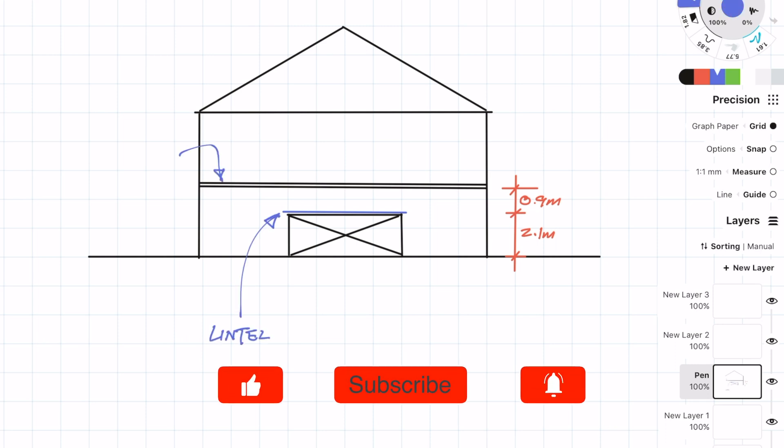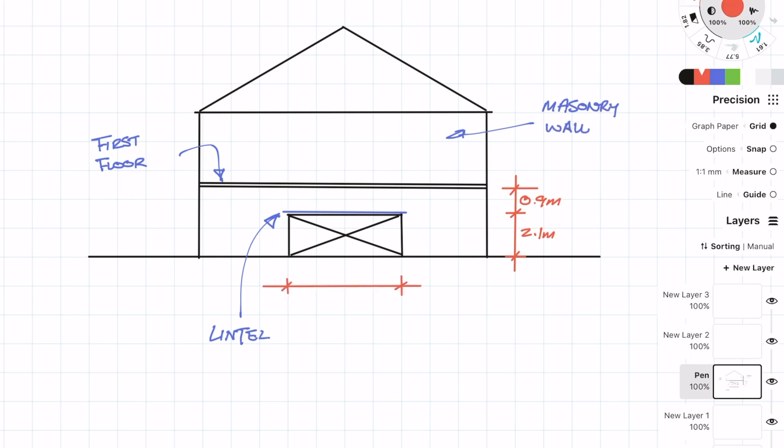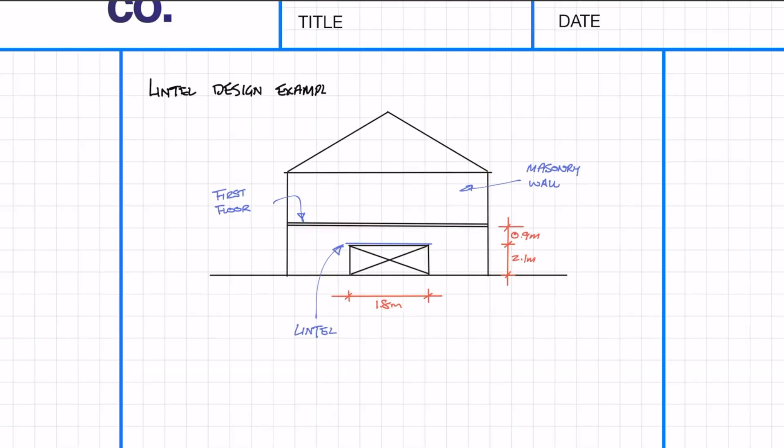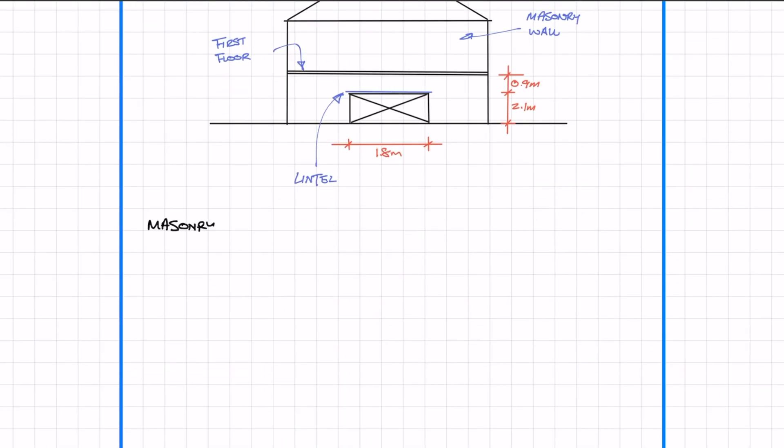In this example we have a 1.8 metre wide opening where the lintel height is 2.1 metres above the ground level and the first floor is 0.9 metres above the lintel. The first floor is going to be made out of timber and the masonry wall which we're supporting with the lintel is going to be a cavity lintel made up of 100 brick and 100 block.